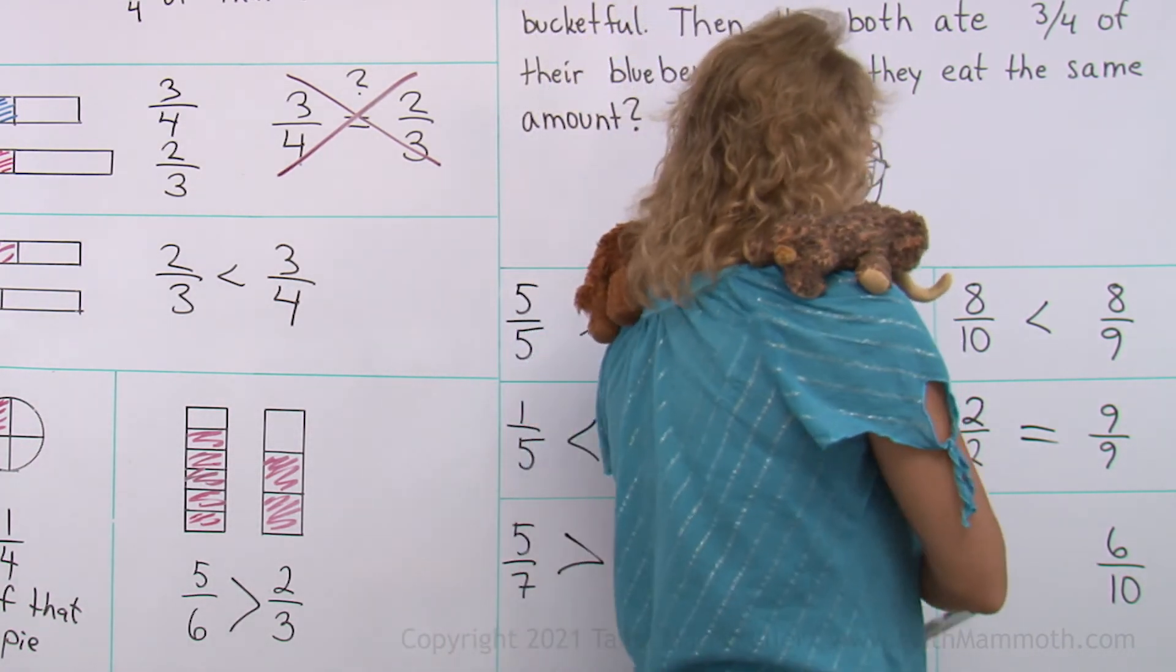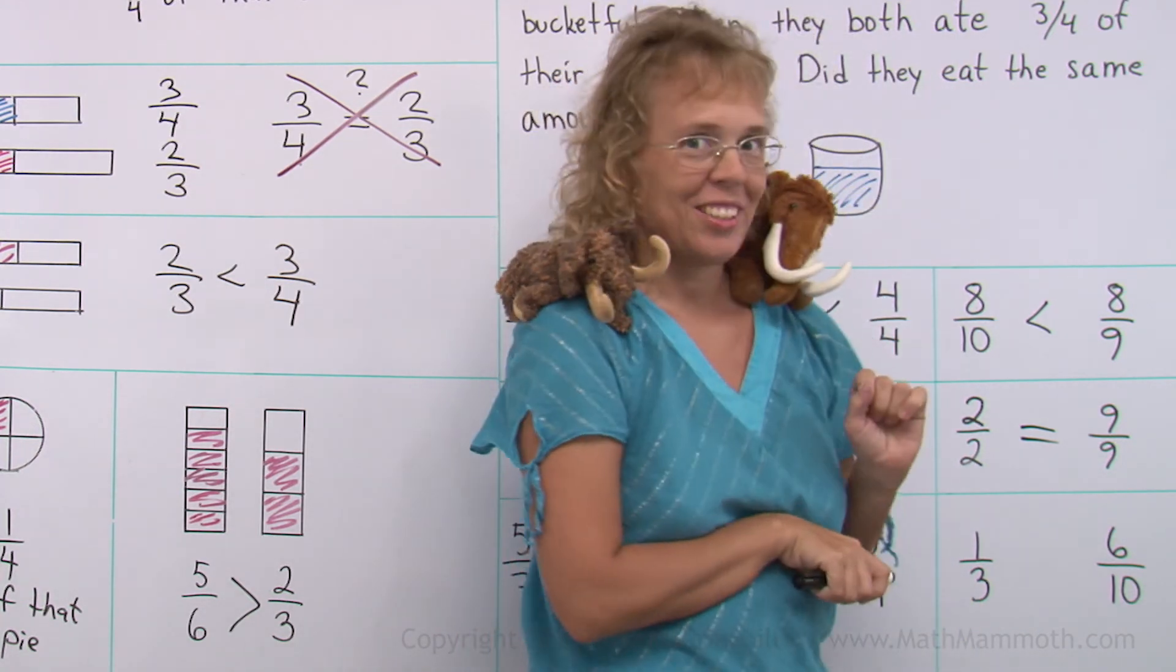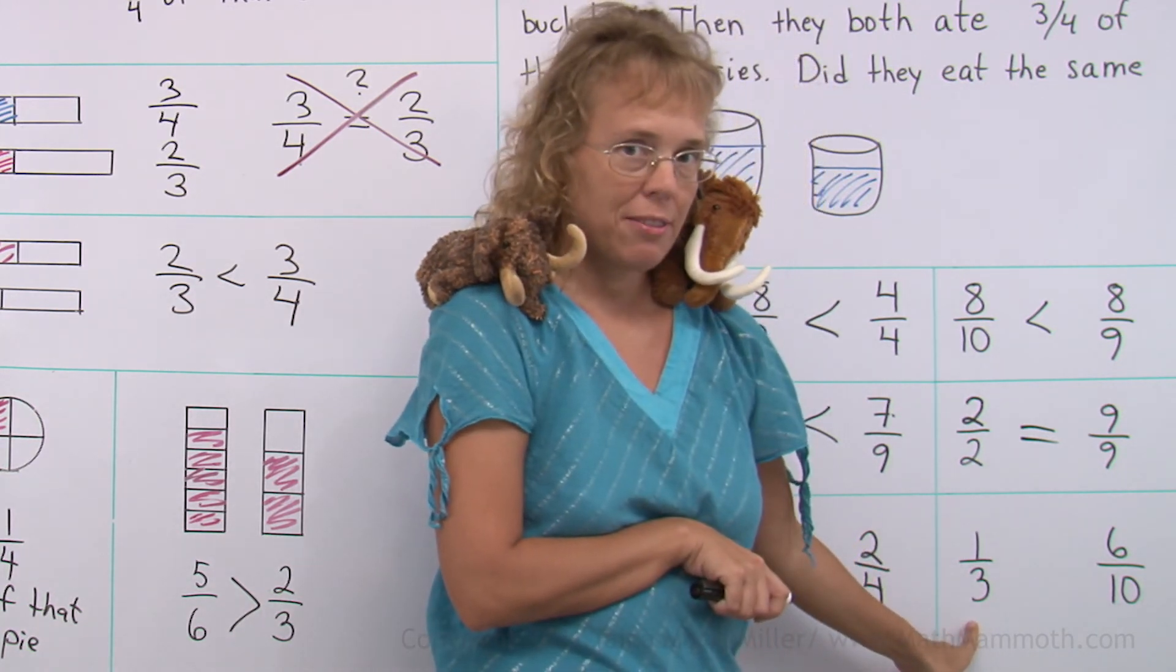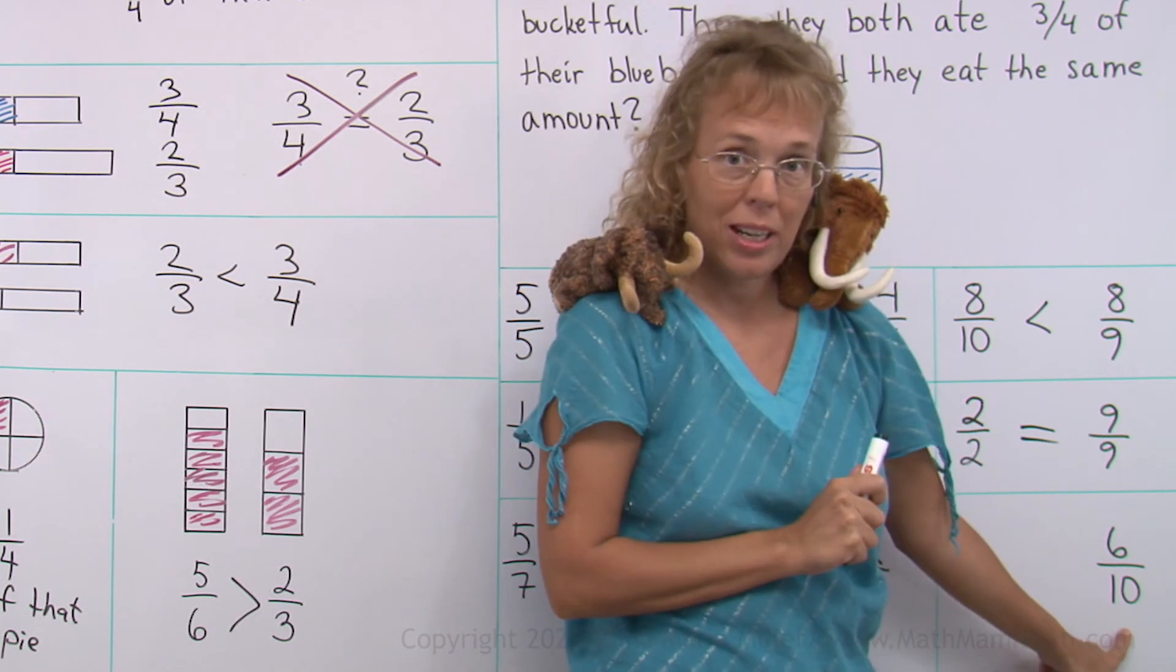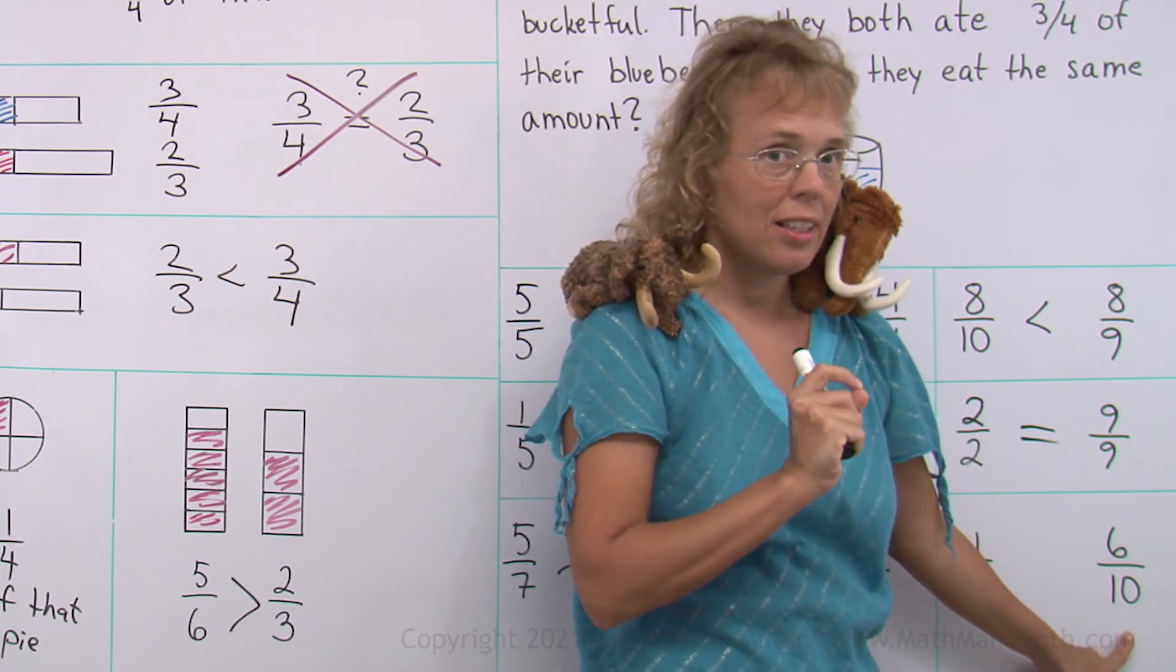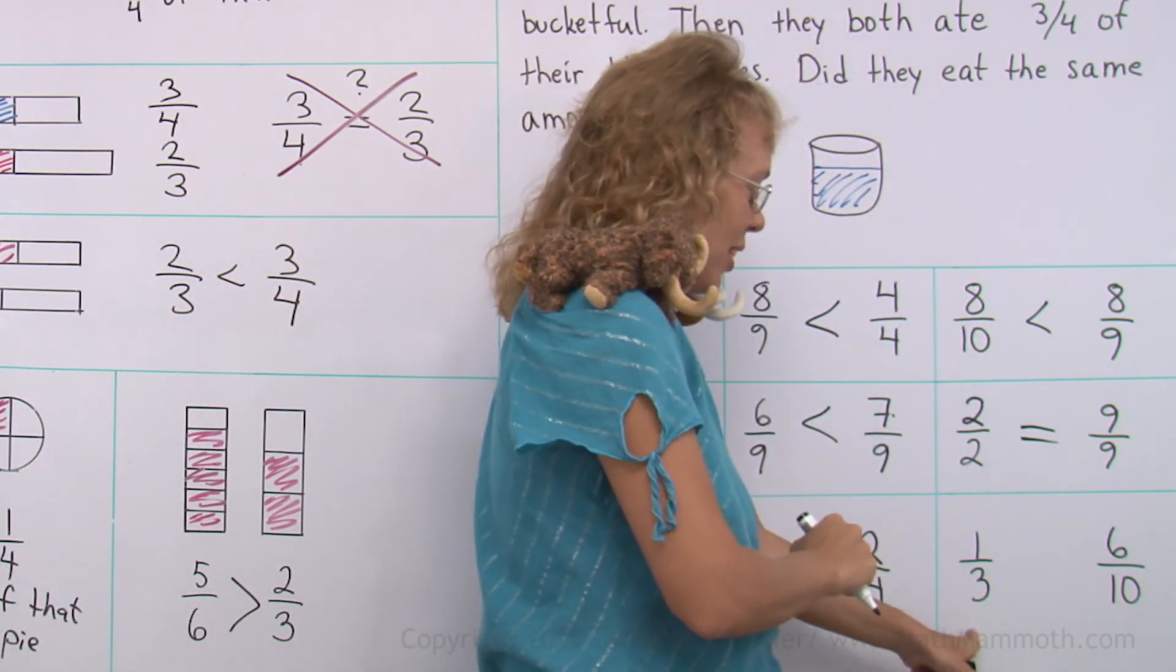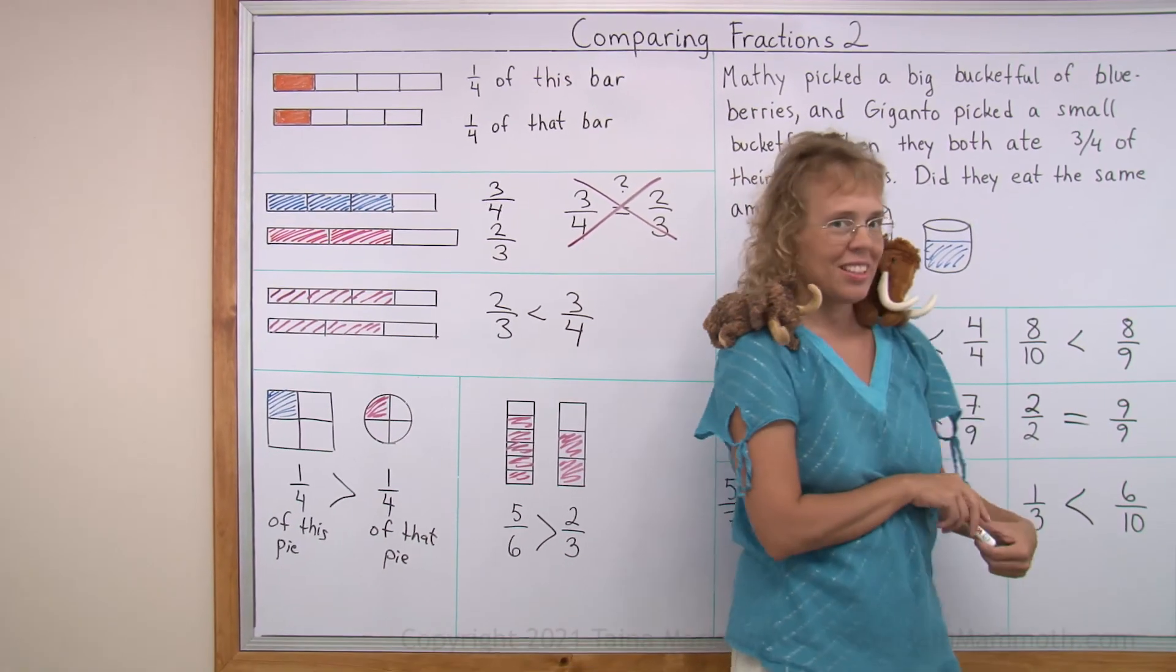And then lastly, one-third and six-tenths. Might be a little trickier. Think this way. Is this more than one-half? No, it's less. How about this one? Is this more than one-half? Yes, it is, because five-tenths would be one-half. So six-tenths is a little bit more than one-half. And this was less than one-half. So one-third is less than six-tenths. Alright, good job.